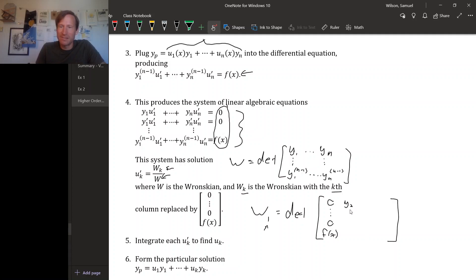And then everything else is the same. So that would be y sub 2 down to the n minus first derivative of y sub 2 and out to y sub n and the n minus first derivative of y sub n. So that's what the numerators are for our u sub k primes.